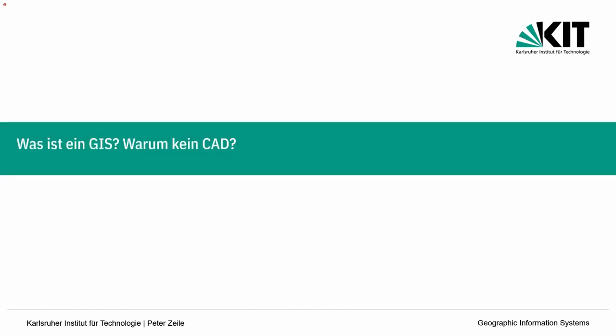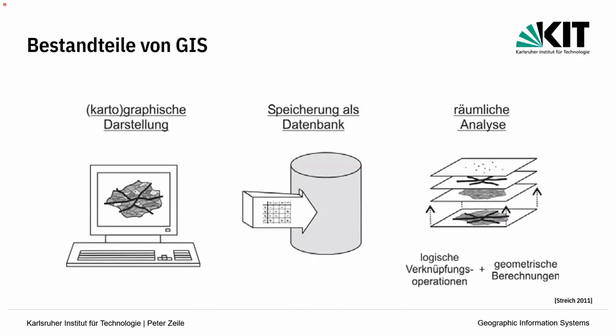Warum benutzen wir ein GIS und kein CAD? Das ist meistens eine Glaubensfrage, die sich viele Architekten in der Ausbildung stellen. Im CAD zeichnet man im Endeffekt nur Striche und hat zunächst keine Datenbank im Hintergrund. Über Building Information Models hat sich das mittlerweile geändert, aber zu der Zeit, als beide Systeme entstanden sind, hatte man im CAD-System eigentlich nur eine grafische Darstellung und keine Datenbank.